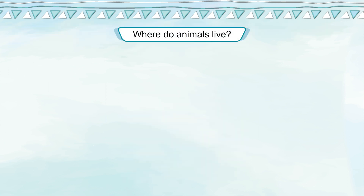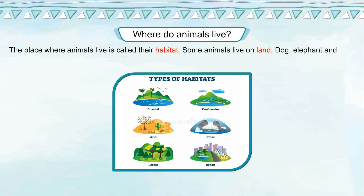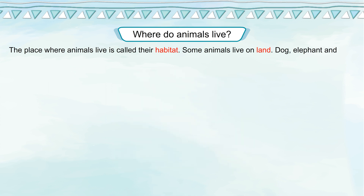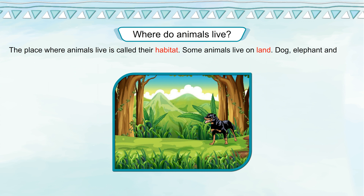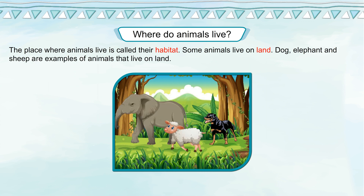Where do animals live? The place where animals live is called their habitat. Some animals live on land. Dog, elephant, and sheep are examples of animals that live on land.